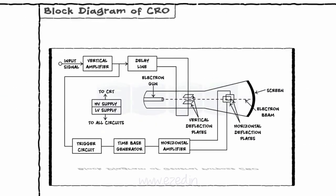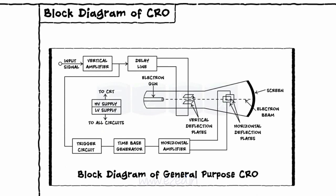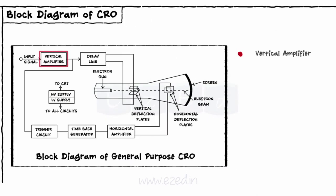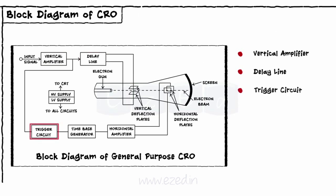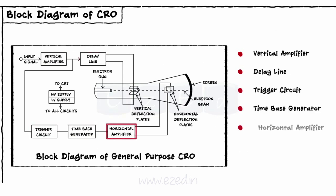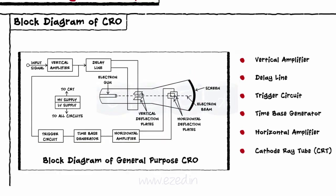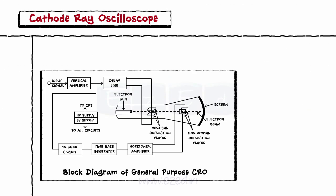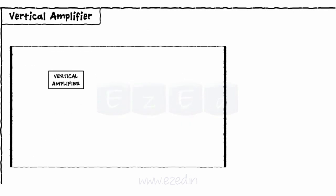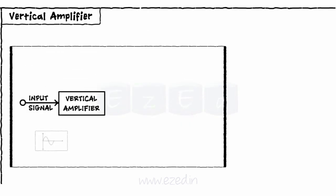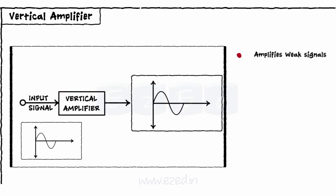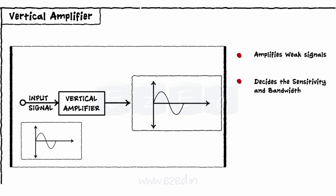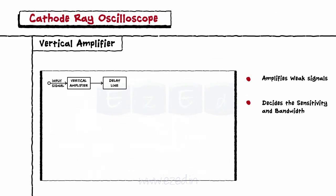Let's study the block diagram of this CRO. It is made up of different blocks such as vertical amplifier, delay line, trigger circuit, time base generator, horizontal amplifier, and cathode ray tube, CRT. The first block is a vertical amplifier. The input signal to be displayed on the screen of the CRO is applied to the vertical amplifier. This amplifier amplifies the weak signals so that they produce measurable deflection on the screen. Vertical amplifier decides the sensitivity and bandwidth of the CRO. Its output is given as input to the delay line block.